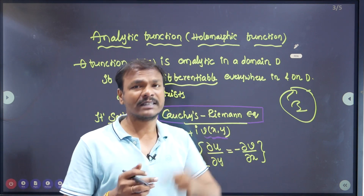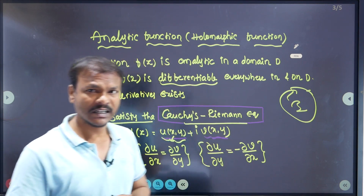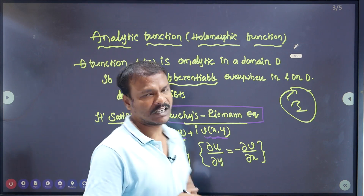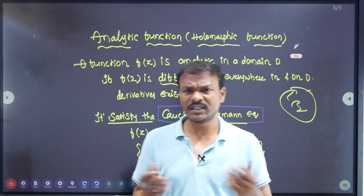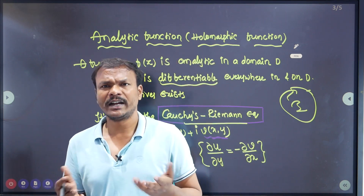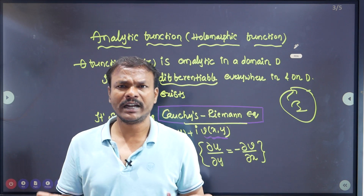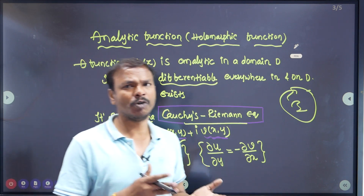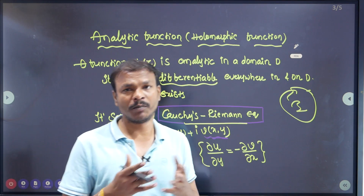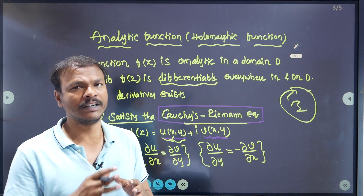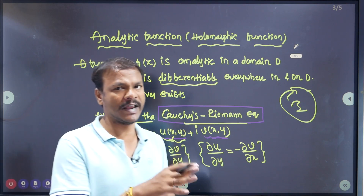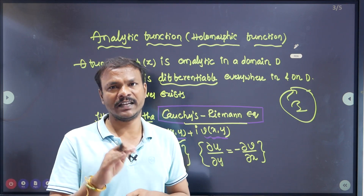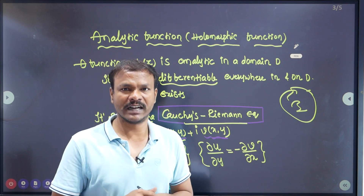So what is the CR equation? For differentiability to exist, the partial derivatives du by dx and dv by dy — the real part and imaginary part of the function — must exist, and the CR equations are satisfied.